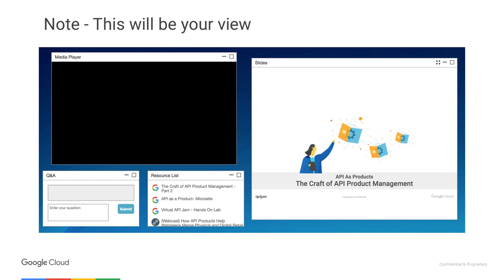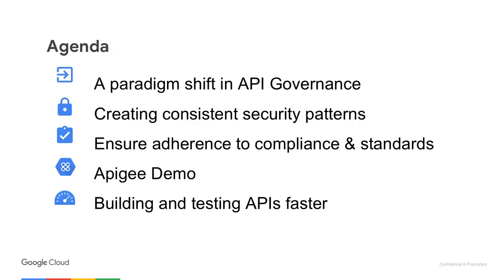Let's take a quick look at the agenda for today's webcast. The first thing we're going to talk about is a paradigm shift in API governance — what is this API Governance 2.0 all about? We're also going to start with creating consistent and secure API patterns and how you can use them to ensure adherence, compliance, and standards for your APIs. Then we'll show you how Apigee can help you do that, and hopefully help our audience understand how they can build and test APIs much faster than they're doing today.